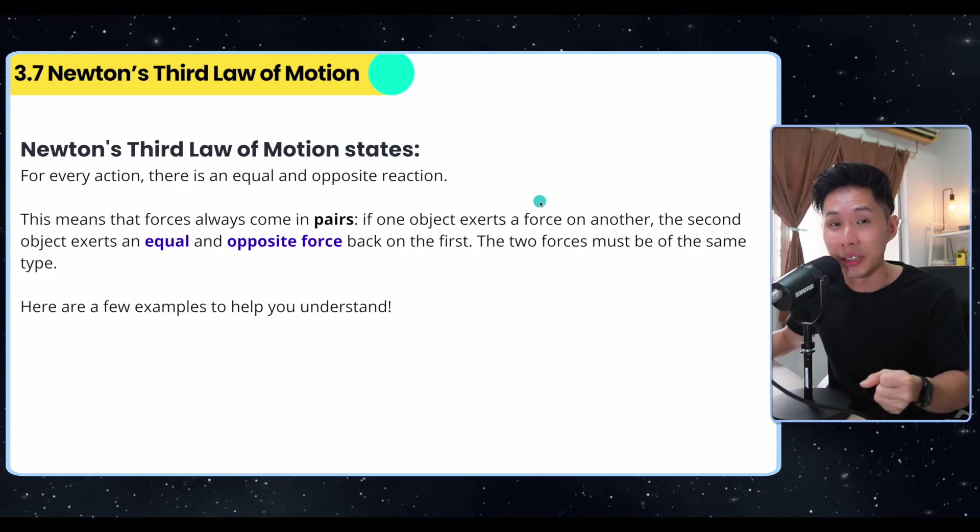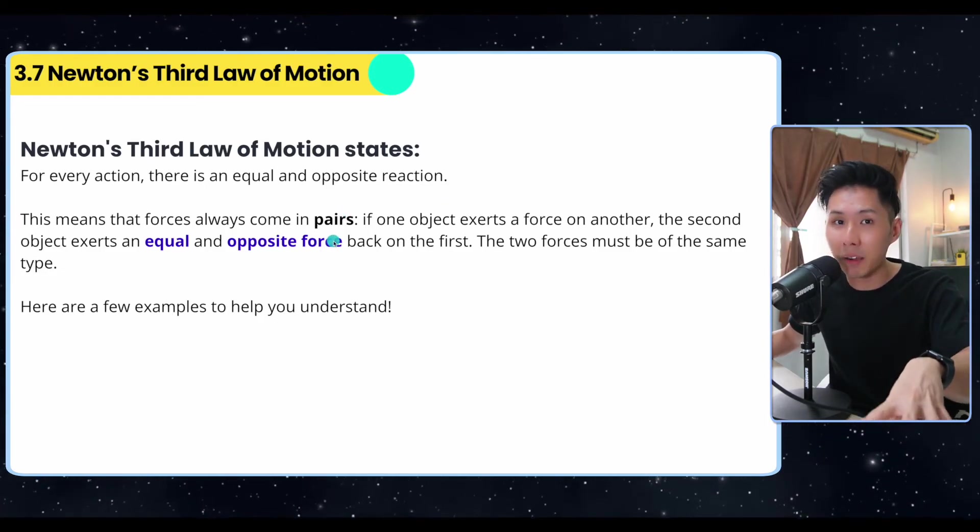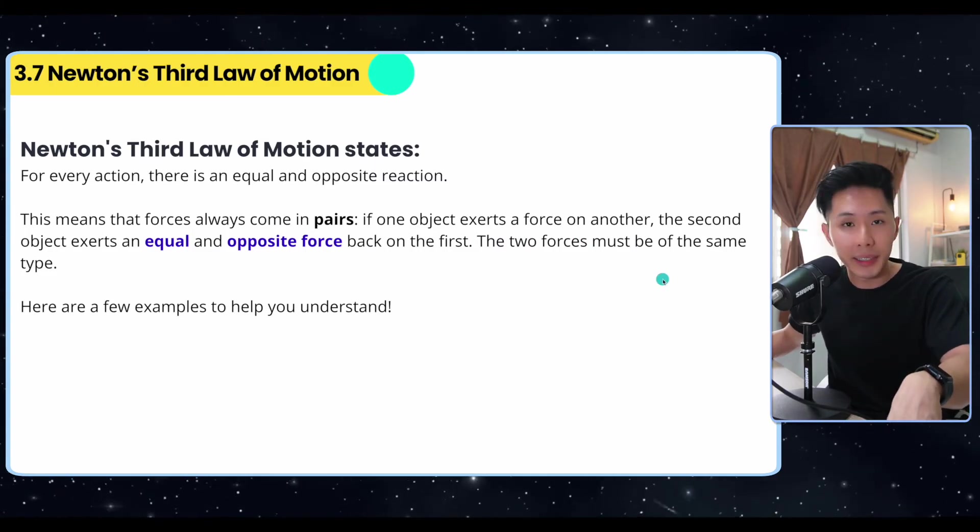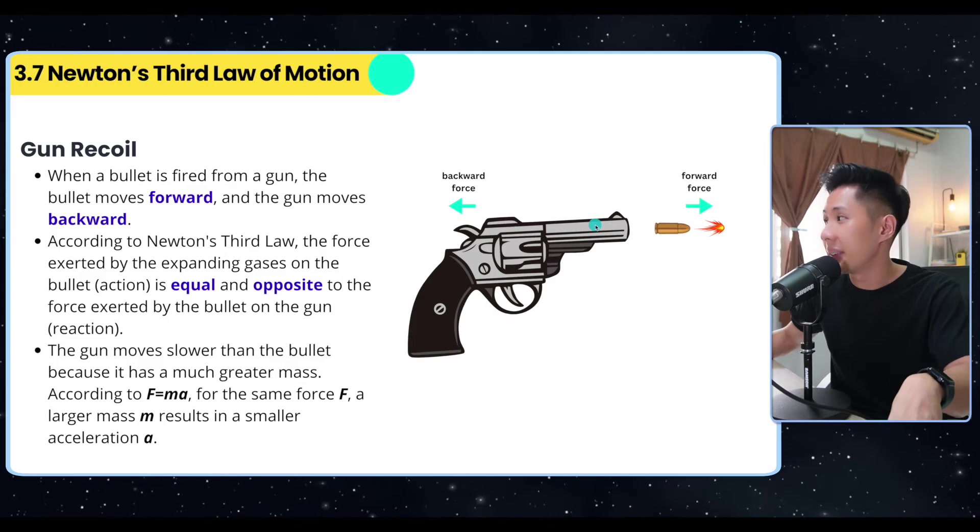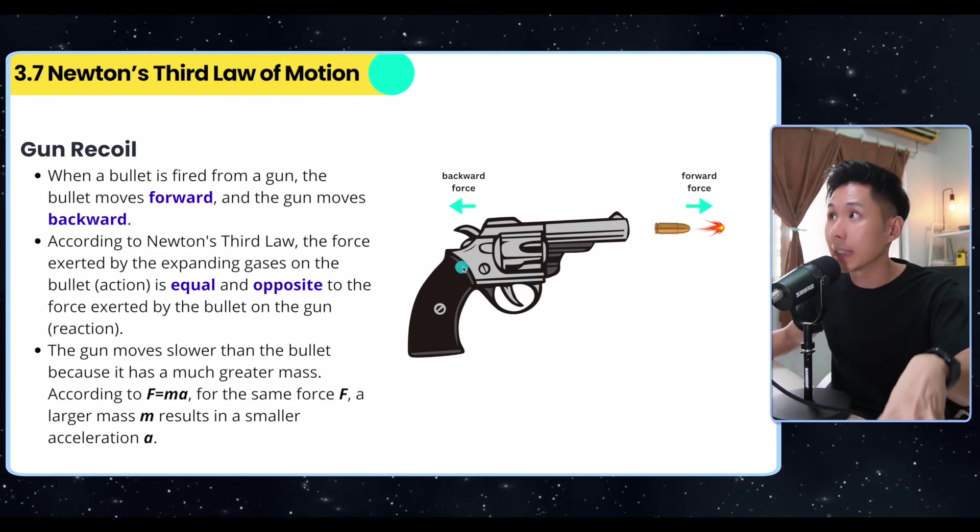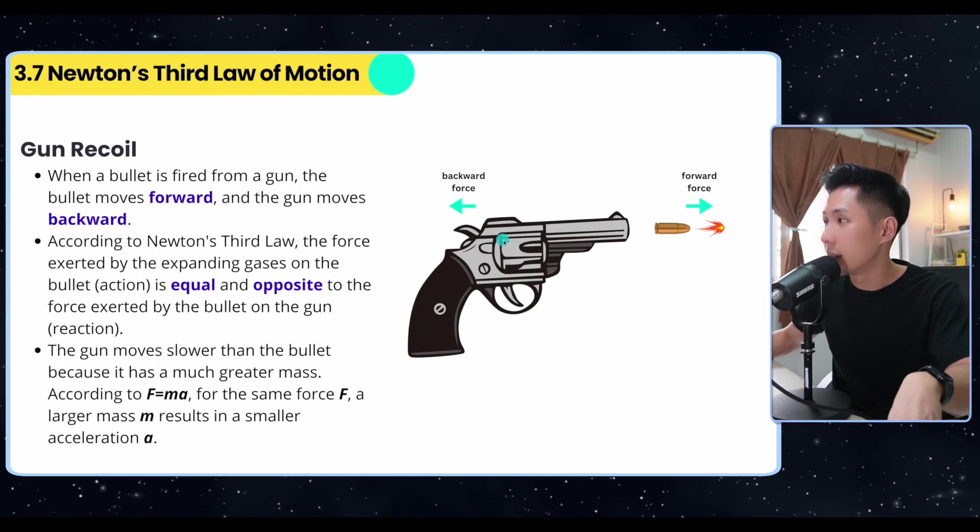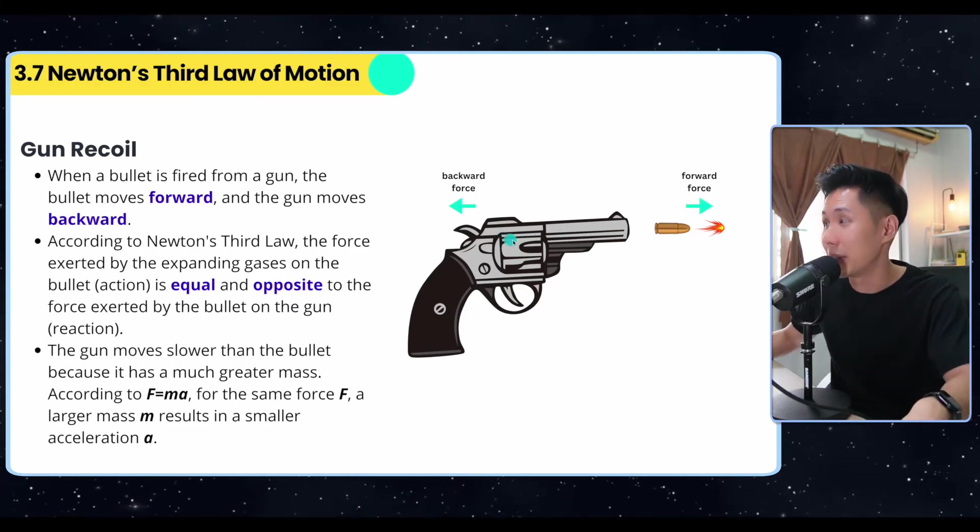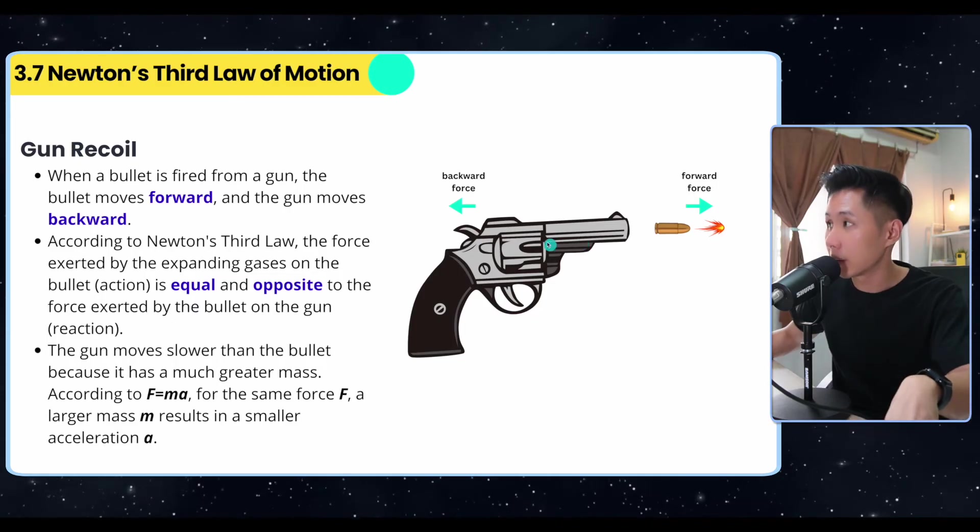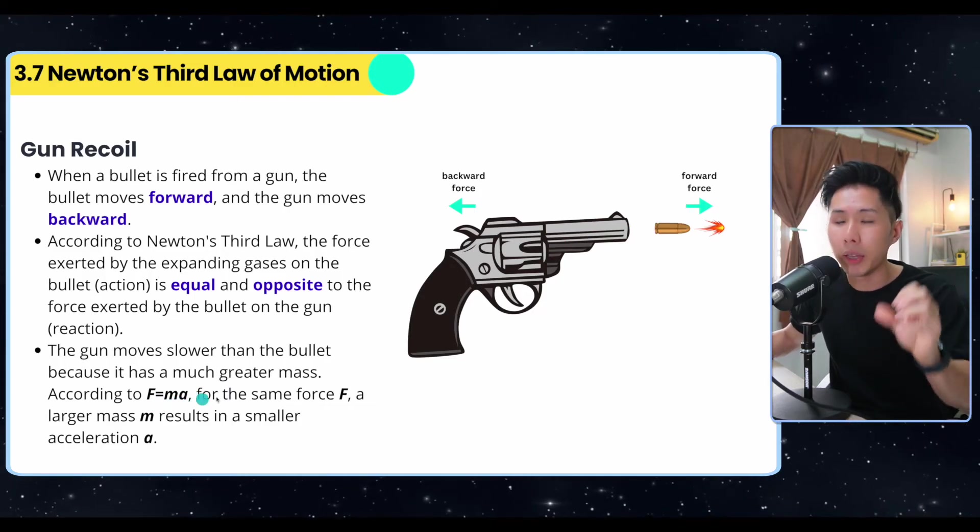Now let's look into Newton's third law of motion. It says that for every action, there is an equal and opposite reaction. Forces always come in pairs. If one object exerts a force on another, the second object exerts an equal and opposite force back on the first. Let me give you an example: gun recoil. The moment the bullet is fired, there will be a slight backward force on the gun. That's because of Newton's third law. Because of the forward force you created, a backward force will be created as well. But the gun moves a lot slower than the bullet, which makes it safer. That's because of its mass. The mass of the gun is heavier than the bullet. As a result, its acceleration is less according to Newton's second law, F equals ma.